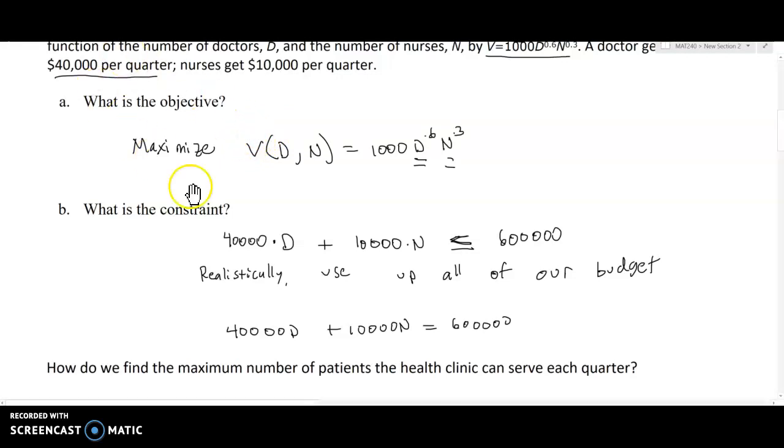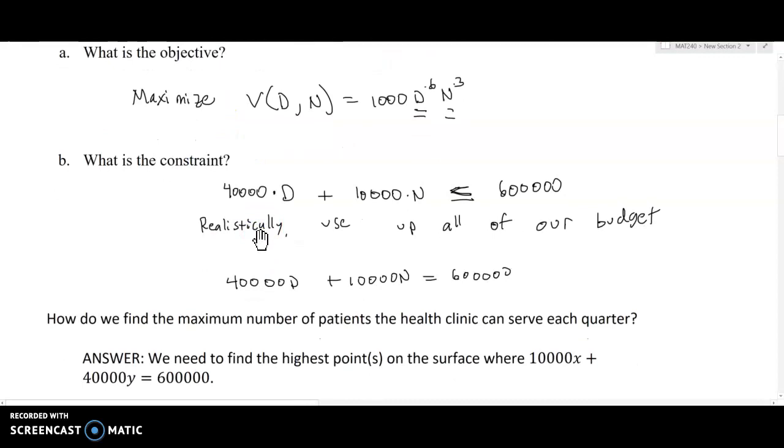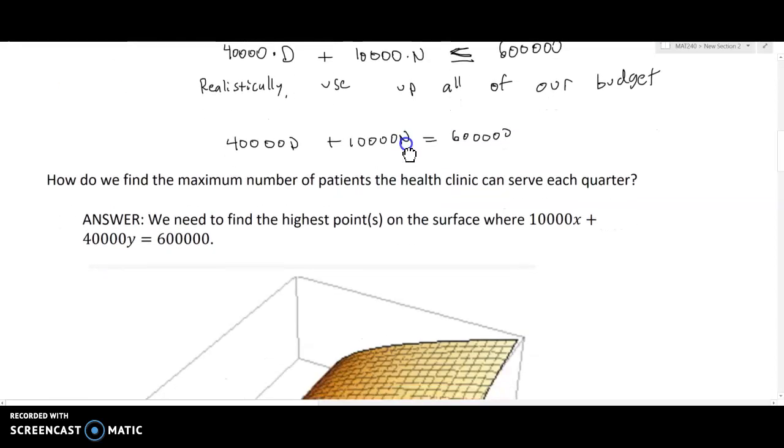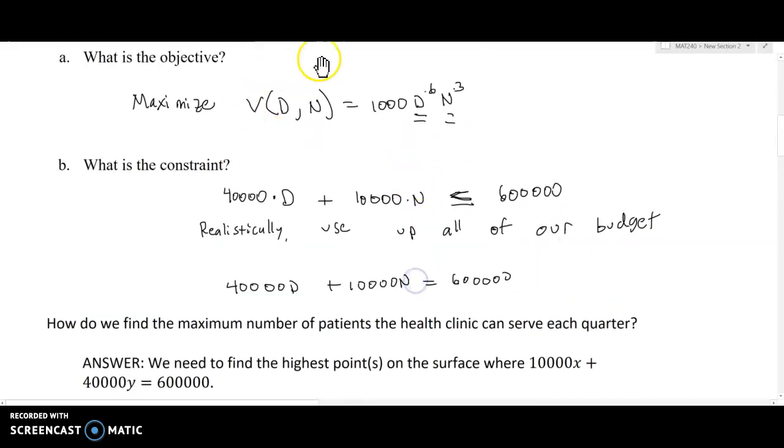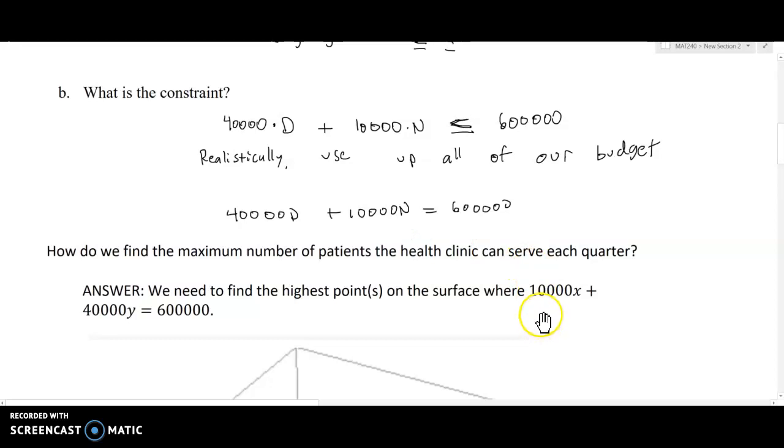The obvious question at this point is: how do we find the maximum number of patients the health clinic can serve each quarter? What is the value of D and N that will make this happen? There are two things I need to keep in mind: number one, I have to make sure that I don't go over budget, and number two, the combination of D and N that I choose should make the number of visits as large as possible. There's a bit of a trade-off. What we need to do in order to maximize this is find the highest point(s) on the surface - our surface being our objective function - such that 10,000x + 40,000y = 600,000.